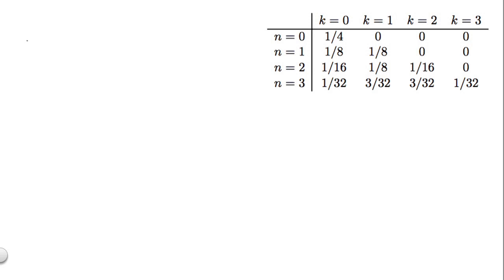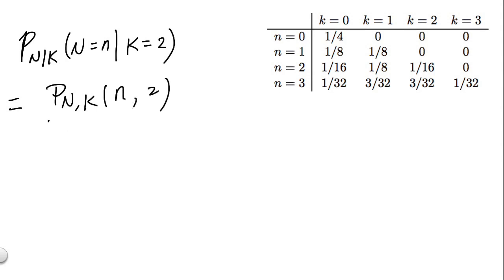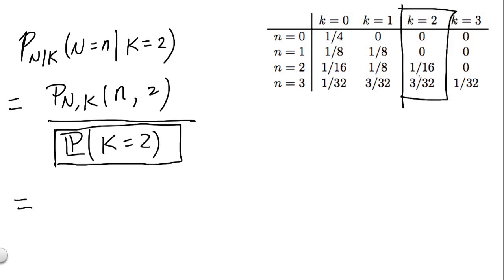Finally, in part D, we're asked for the conditional distribution of n. Written as P(n | k) of n equal to little n, conditional on k is equal to 2. Again, we'll apply the formula for conditional probability. This is equal to the joint PMF evaluated at n and 2, divided by the probability of k being equal to 2. Since we've computed the entire table of the joint PMF, this shouldn't be too difficult. In particular, for the denominator, the probability that k is ever equal to 2, we just look at the column right here. So the entries in this column show all the cases where k can be equal to 2. And in fact, we can see that k can be equal to 2 only if n is equal to 2 or 3.